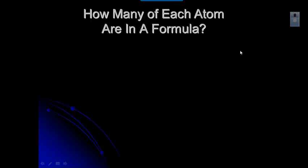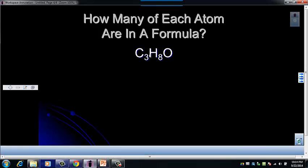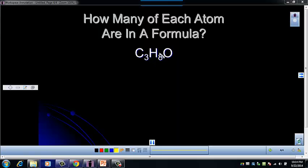Let's go through some examples. Pause the video between each example, try to figure out how many of each element are in the formula, then start the video again to check. In this first example, you've got three carbons, eight hydrogens, and one oxygen.